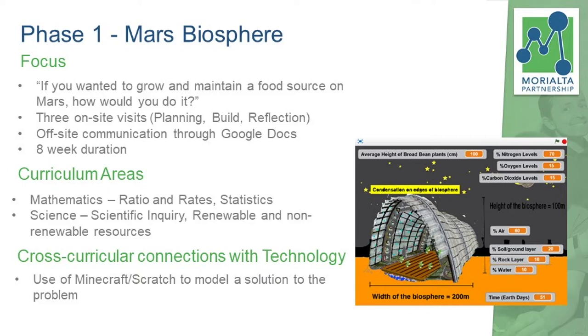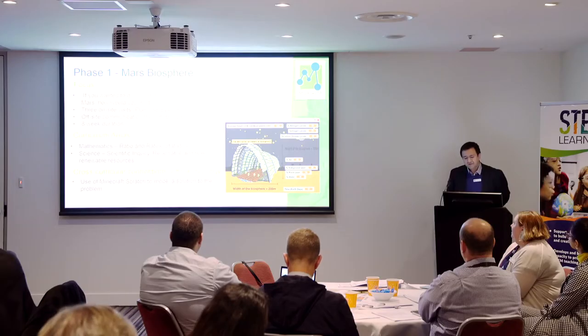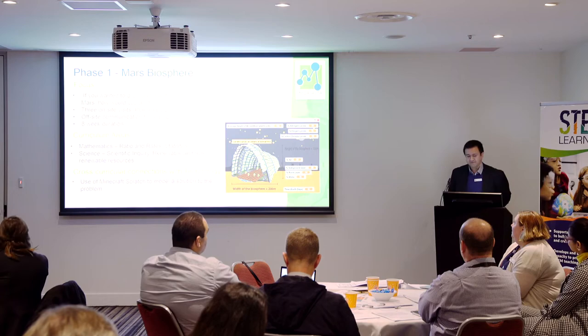The question we gave them in this first phase was: if you wanted to grow and maintain a food source on Mars, how would you do it? To start off, we tried to think of how we get the kids engaged. Luckily enough, the movie The Martian had just been released, so we showed them a short clip with Matt Damon. If you haven't seen that movie, I suggest you watch it — it's really good. And then the question really was, how would you do it?